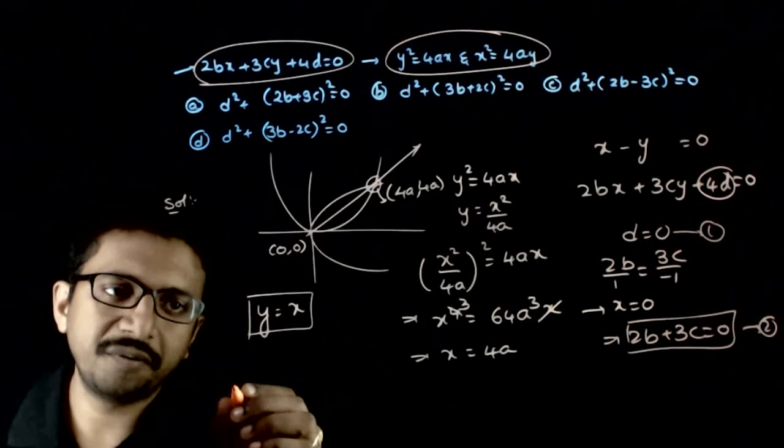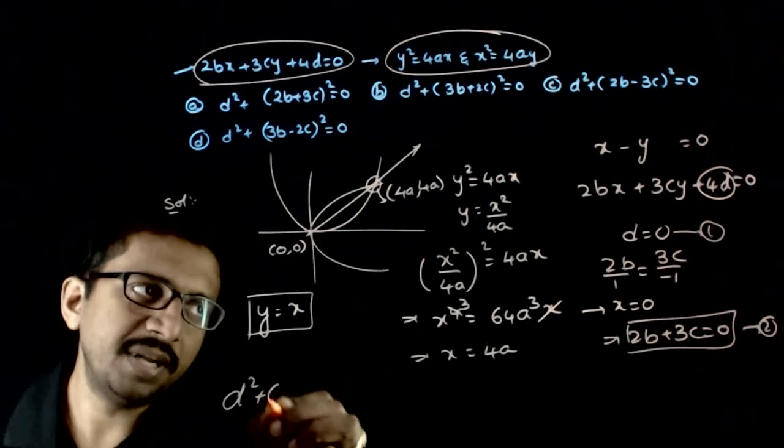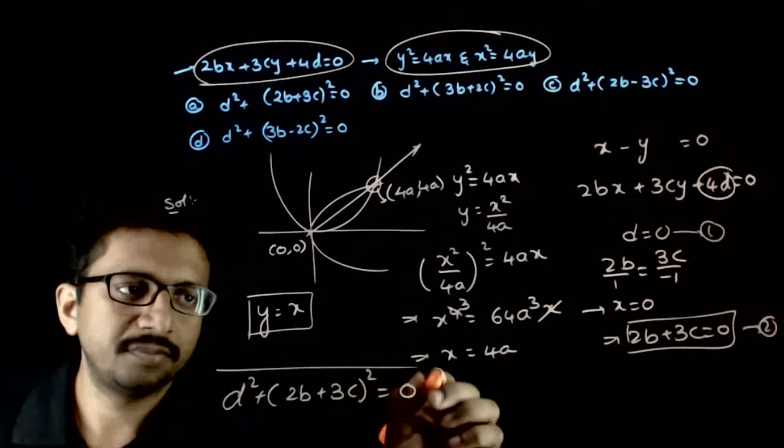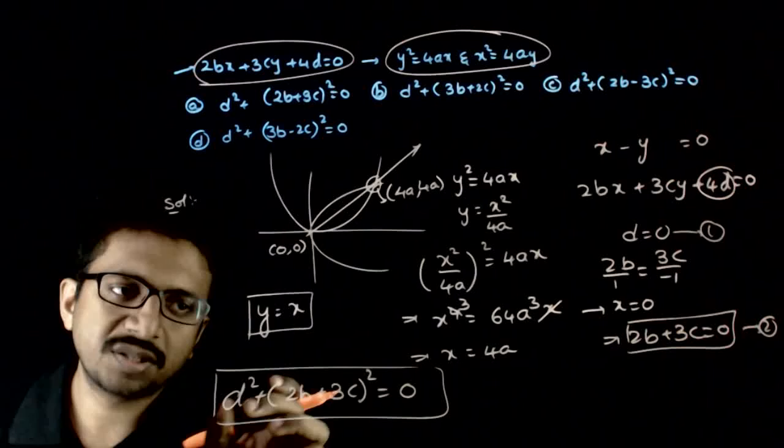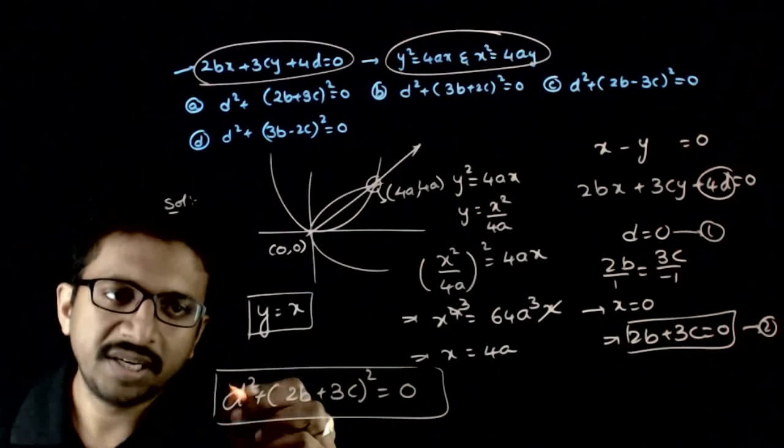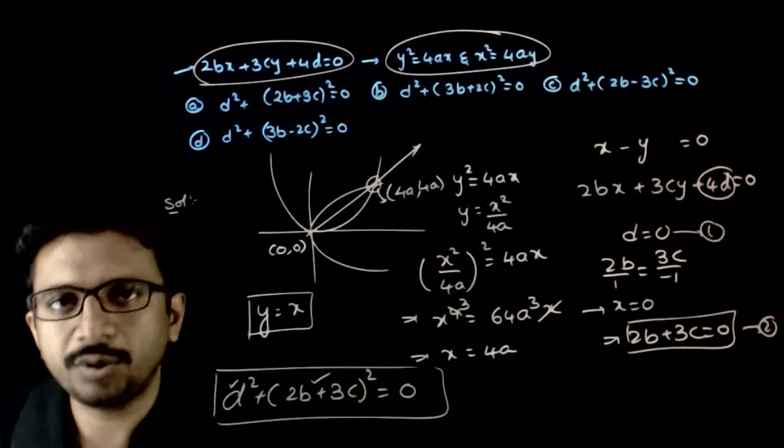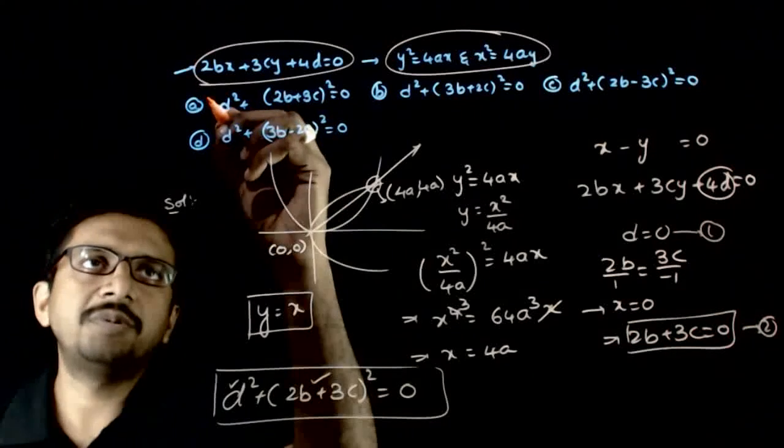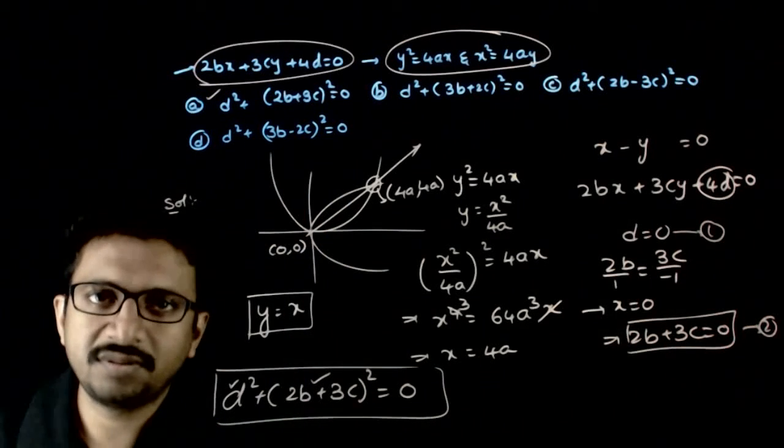So what is the effective condition? d squared plus 2b plus 3c whole squared equals 0. So if this square plus this square equals 0, then d has to be equal to 0 and 2b plus 3c should also be equal to 0. So the first option is the right option. Thank you.